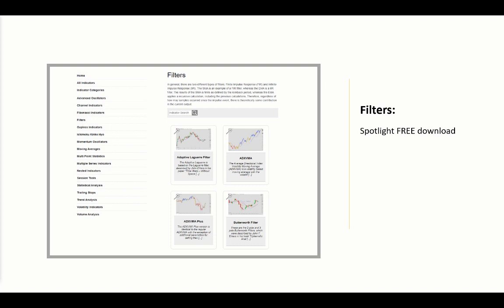To wrap this up, the free download for the ADX VMA is in the filters category. Other than the ADX VMA and the Plus version, you will find the adaptive Laguerre, Butterworth, SuperSmoother, and the Coral filter, just to name a few. In total, our library has 145-plus indicators available for a one-time payment of $195 — that's for all of them, not per indicator, and it's a one-time flat fee, not a monthly fee. If you're not yet a member, head on over to lizardindicators.com and sign up.